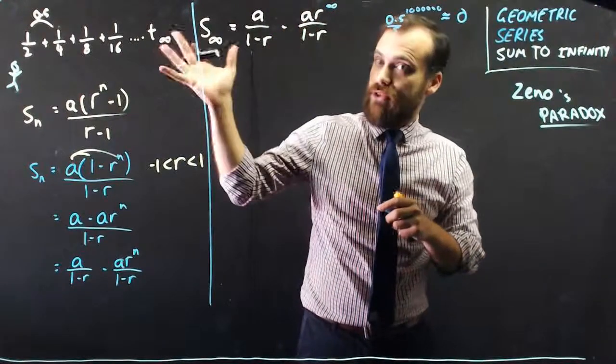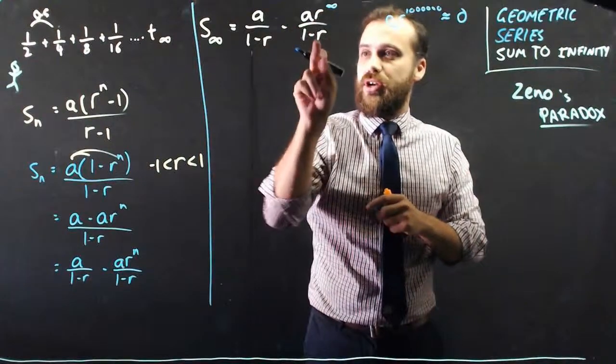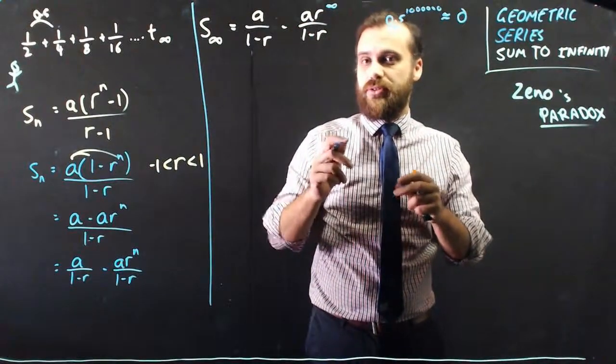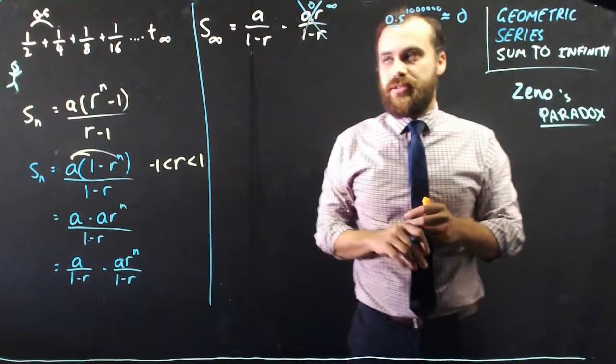That means that a, no matter what the first value is, times that is going to be 0. So 0 divided by anything is going to be 0. So, we can get rid of this.